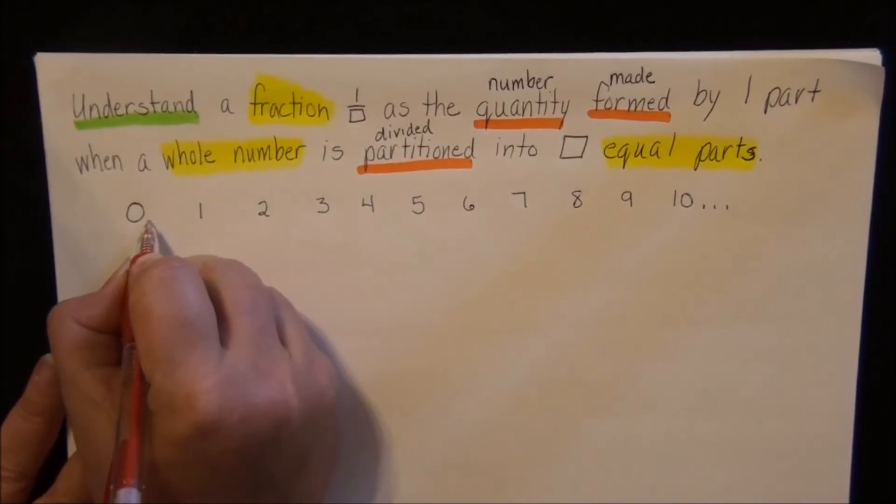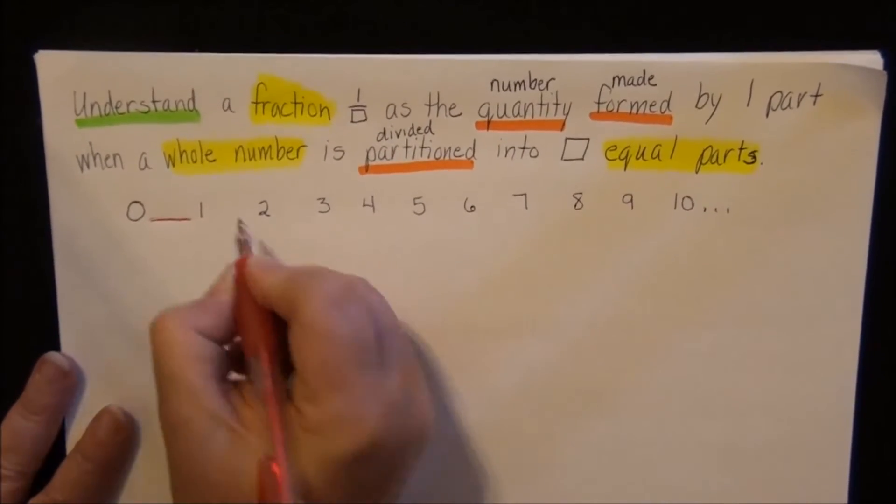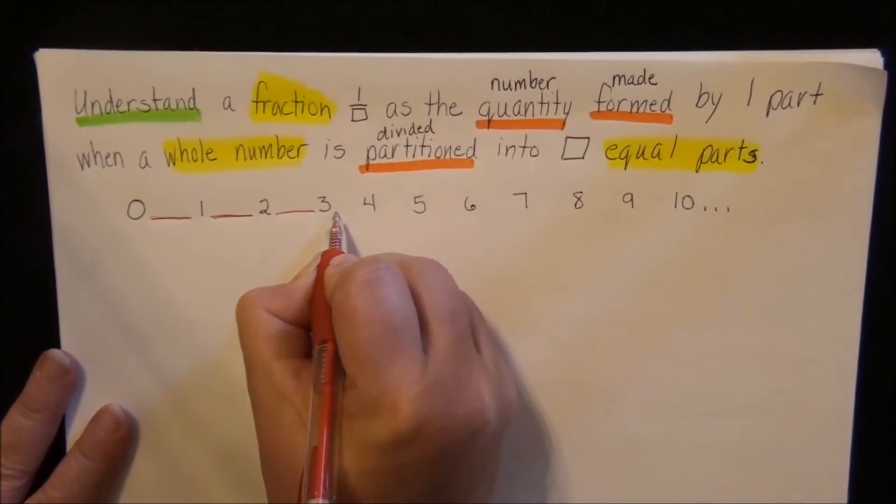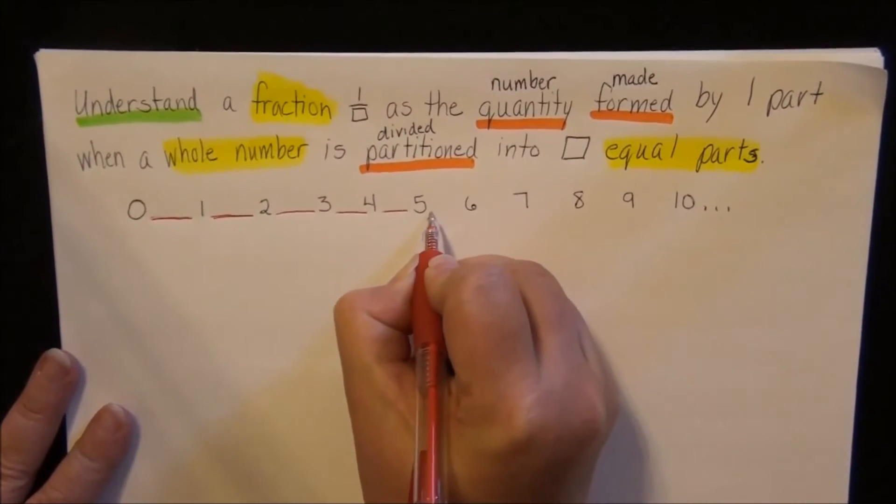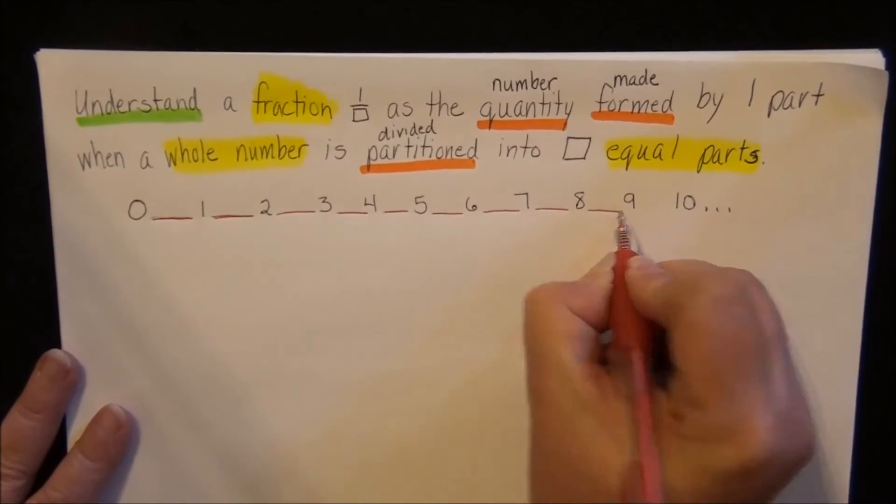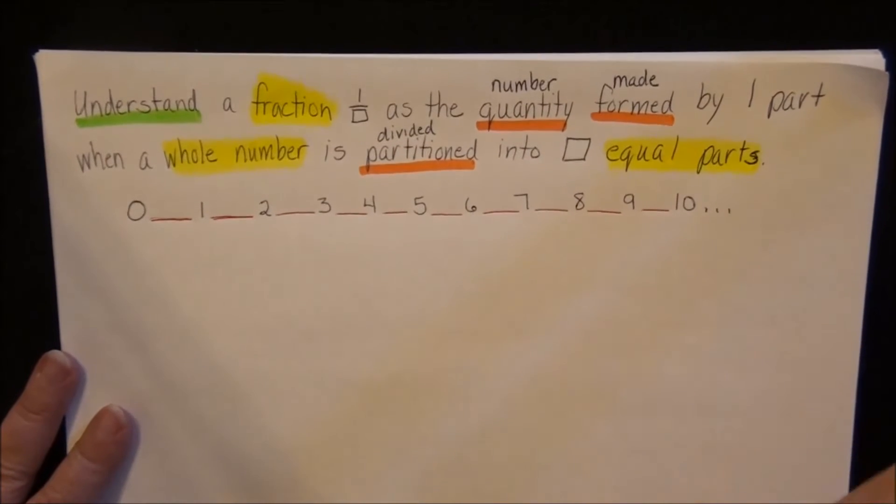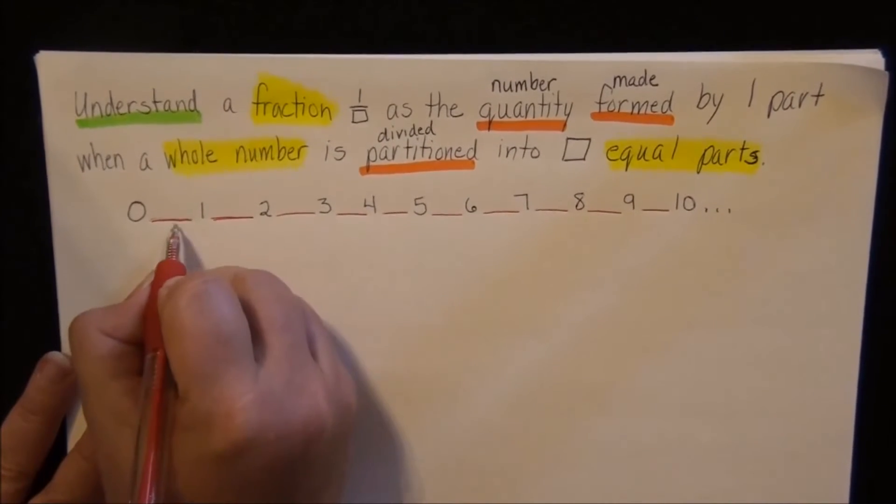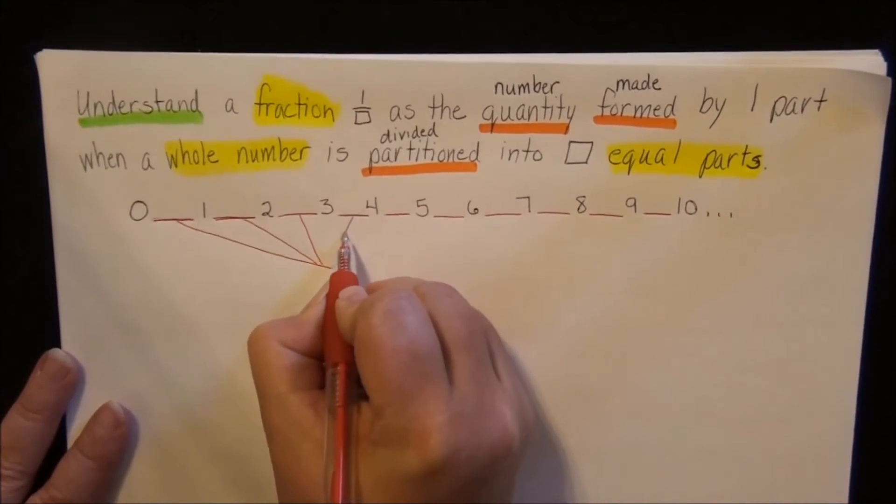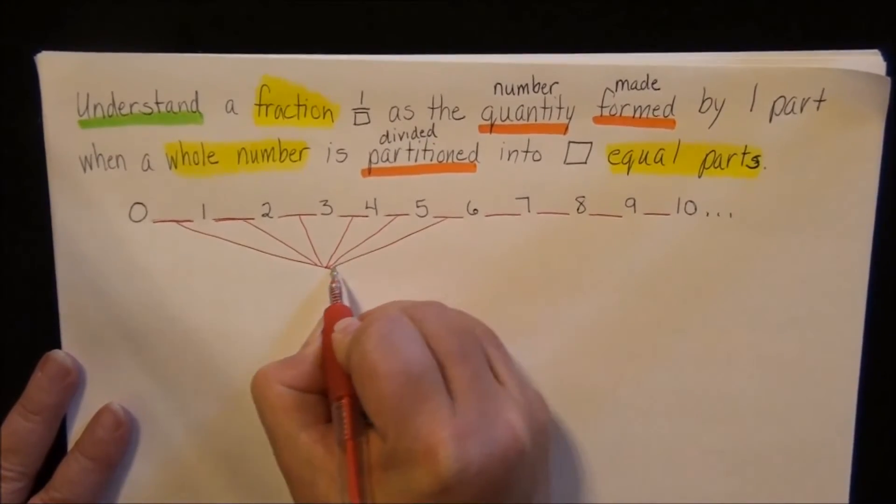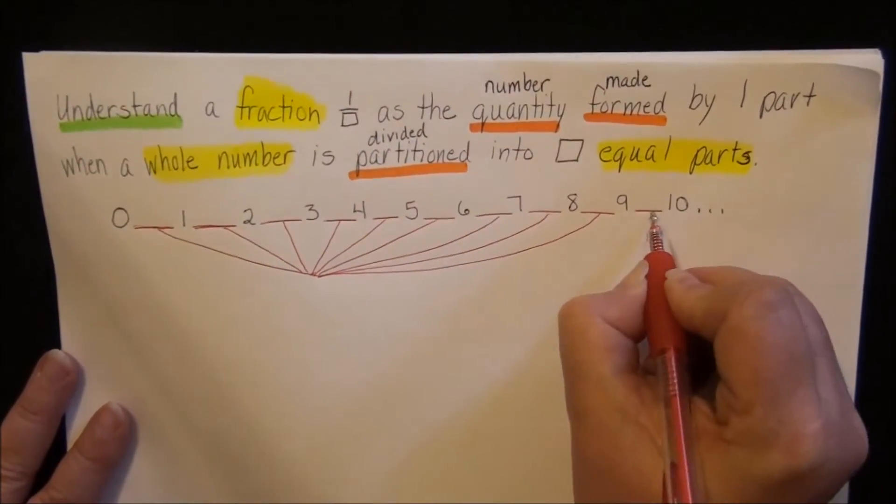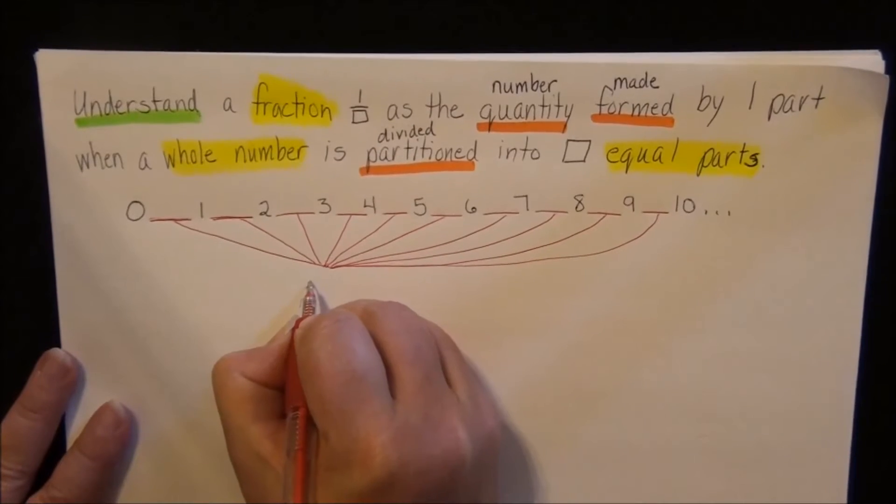Okay, so now in between zero and one, there are other numbers. Between one and two, there are other numbers. Between two and three, between three and four, between four and five, between five and six, between six and seven, between seven and eight, between eight and nine, between nine and ten, and in between all the numbers that follow. These numbers that are in between are all called fractions.